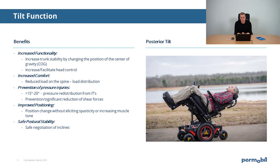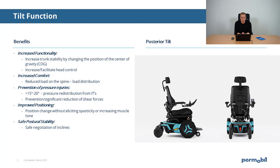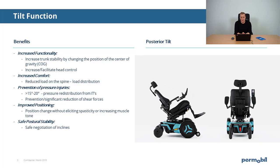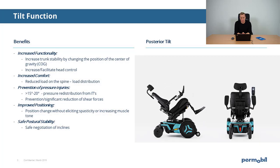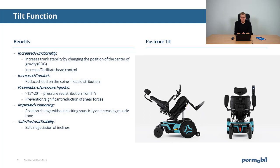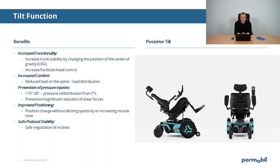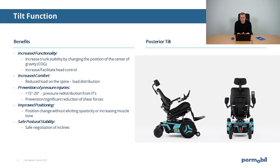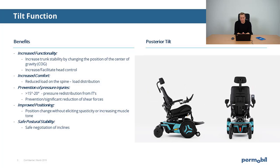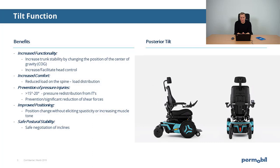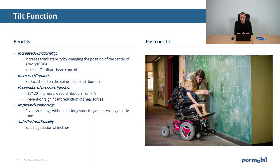The first function we want to talk about is the Tilt function. The Tilt function is probably one of the most common PowerSeat functions used for power wheelchair users. Power Tilt functions can facilitate functionality. By changing your position in space, you change your center of gravity and your base of support, creating more seated stability.